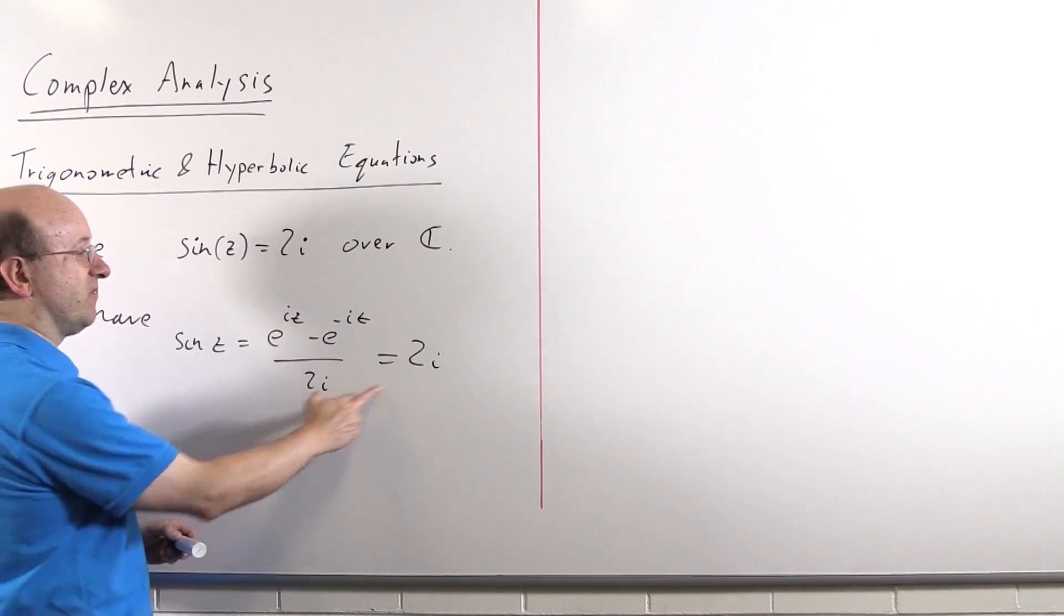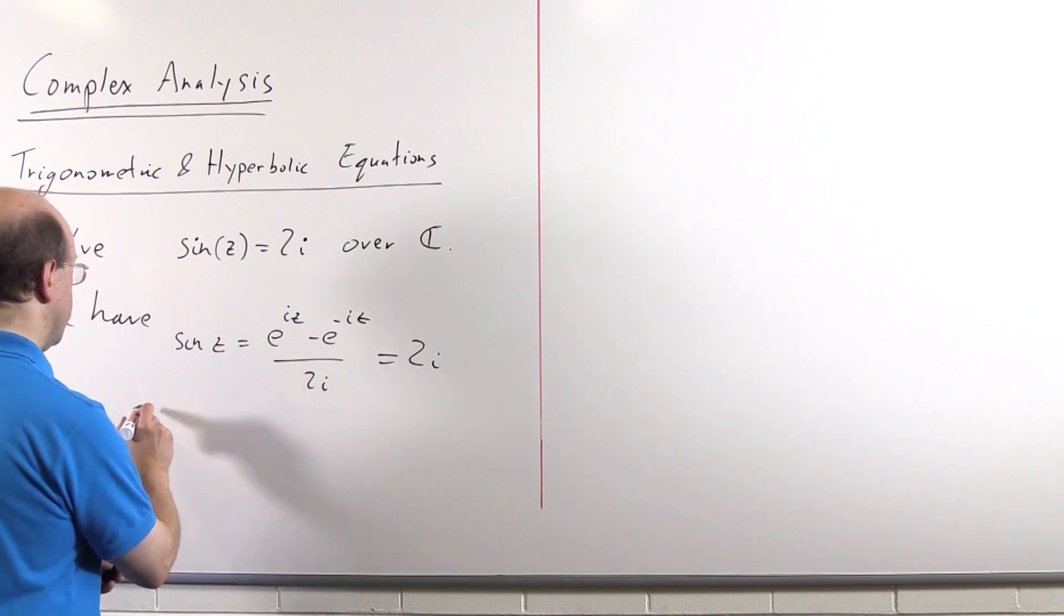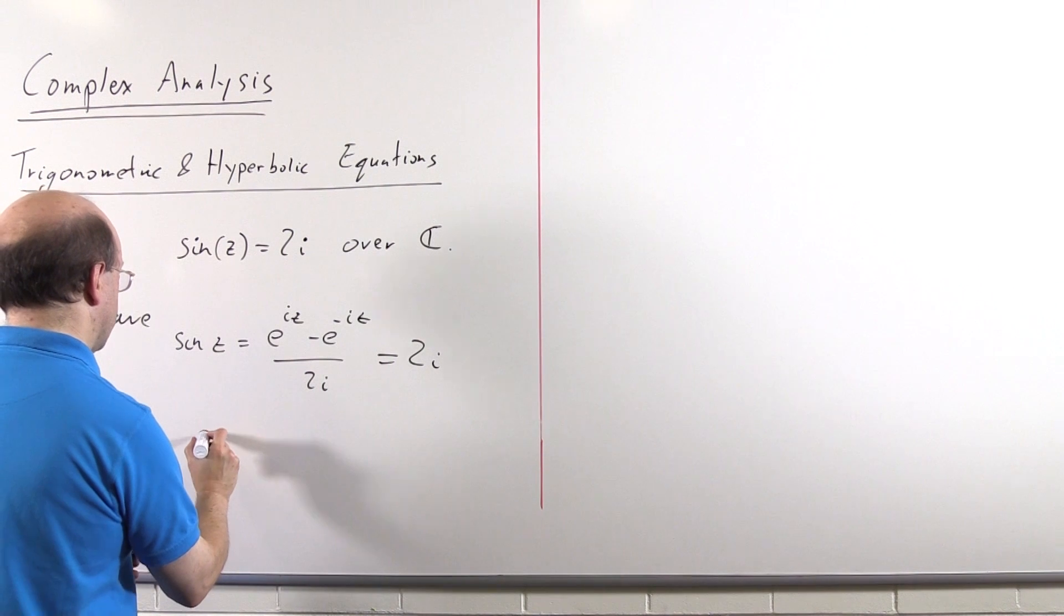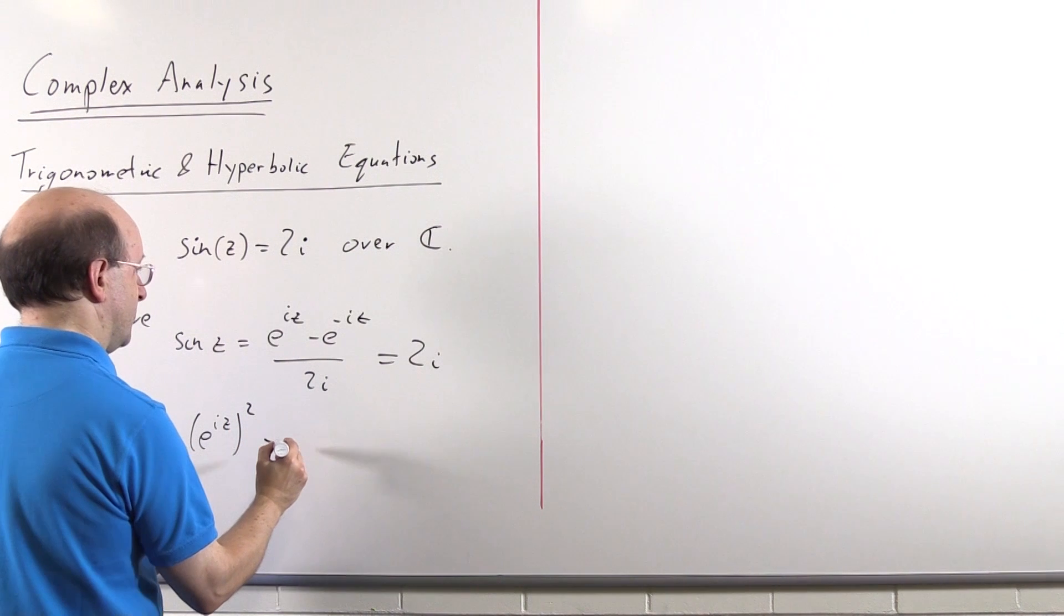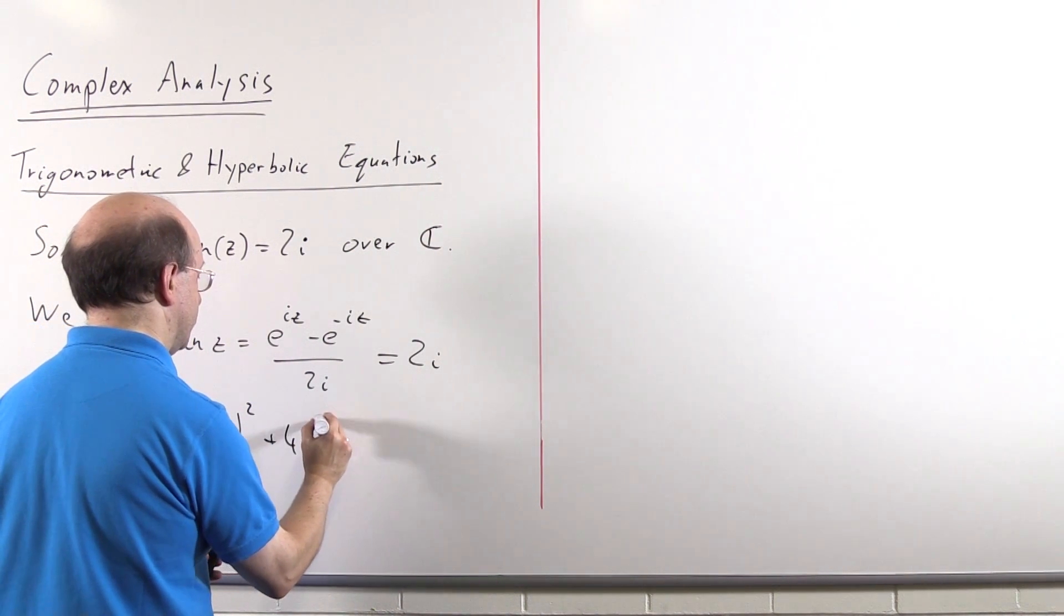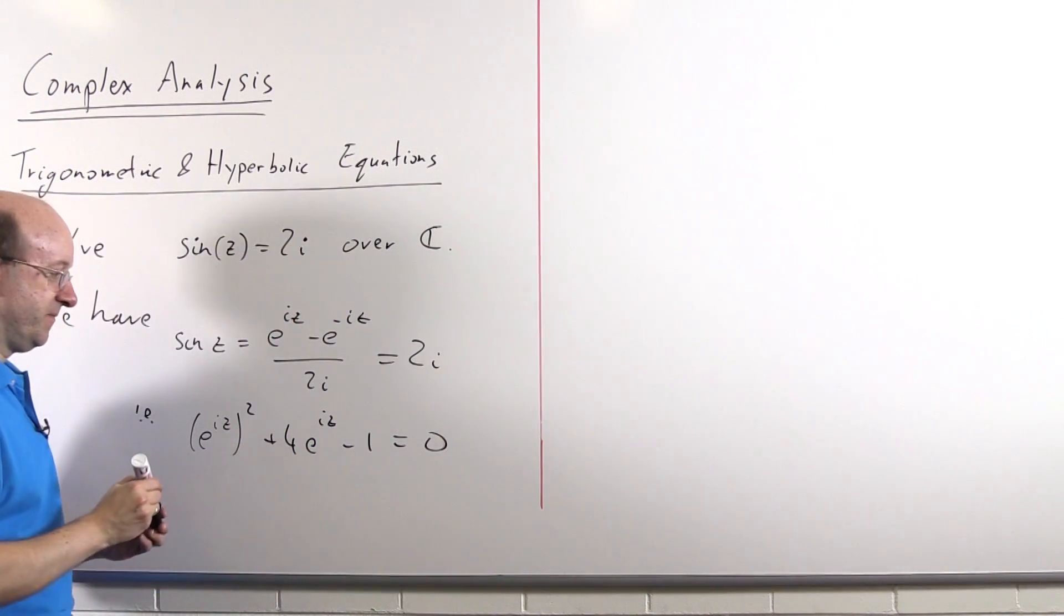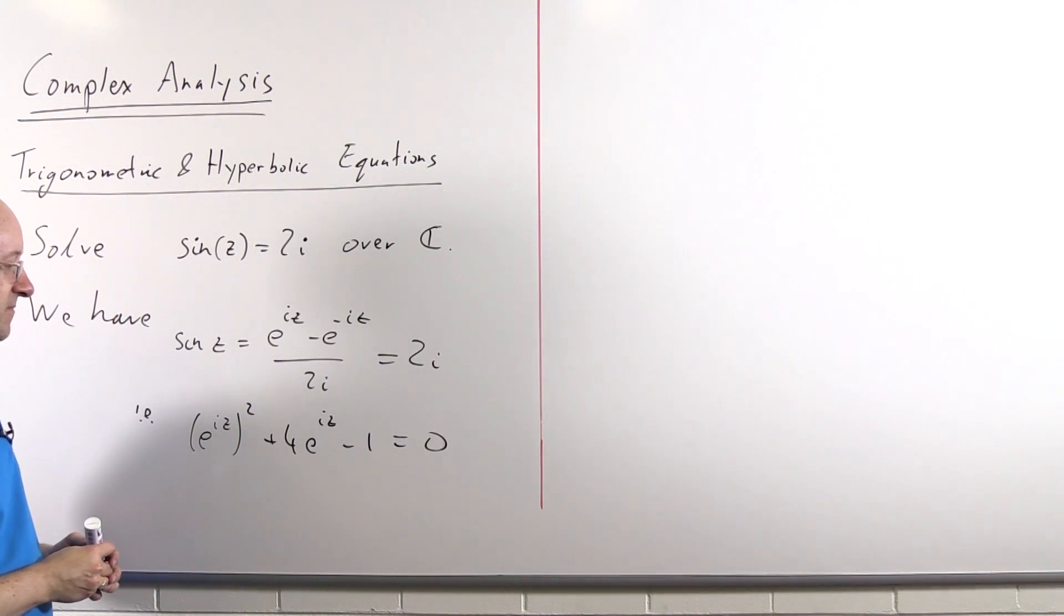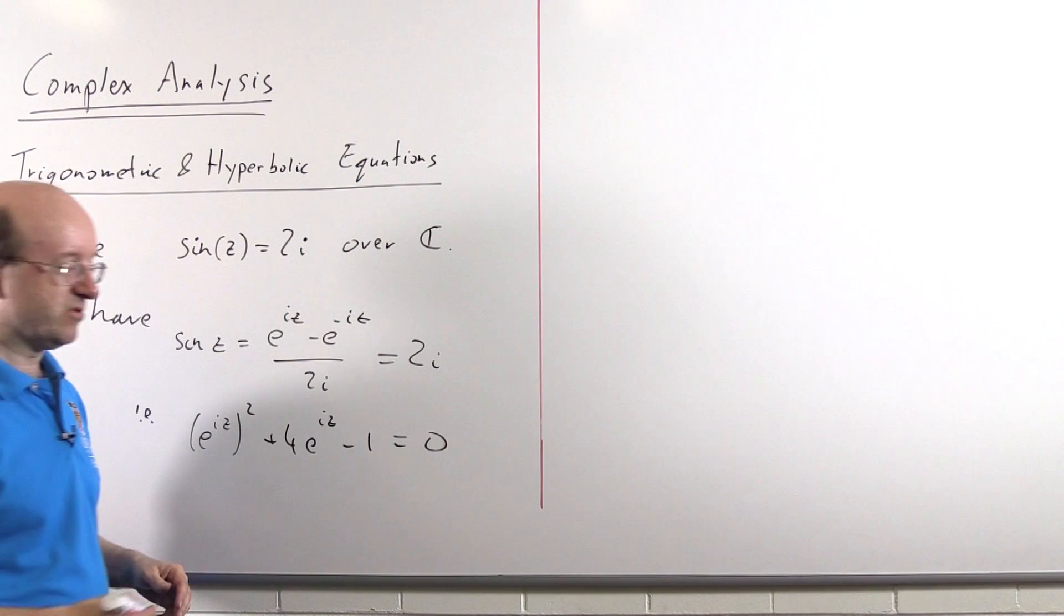So if we cross multiply 2i and then multiply through by e to the iz, what we get is, well that's going to become a minus 4, we're going to get e to the iz squared, plus 4e to the iz minus 1 equals 0, which you can see is a quadratic equation in e to the iz. Now you can solve that using a quadratic formula or you could complete the square.